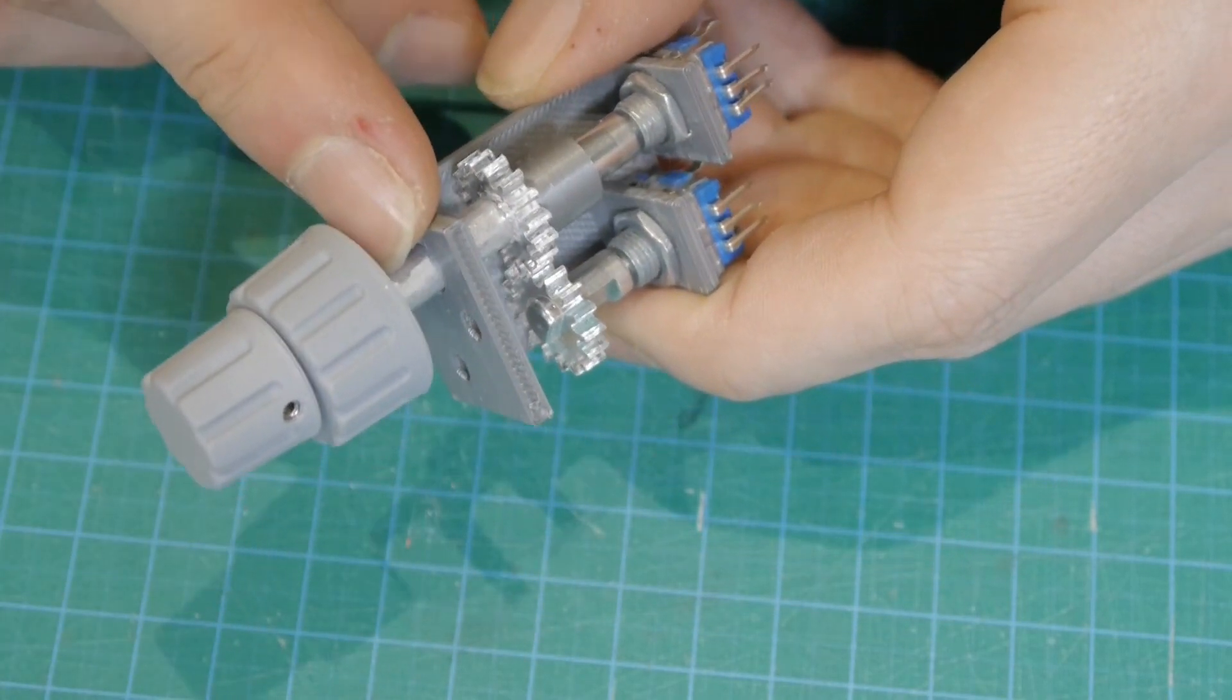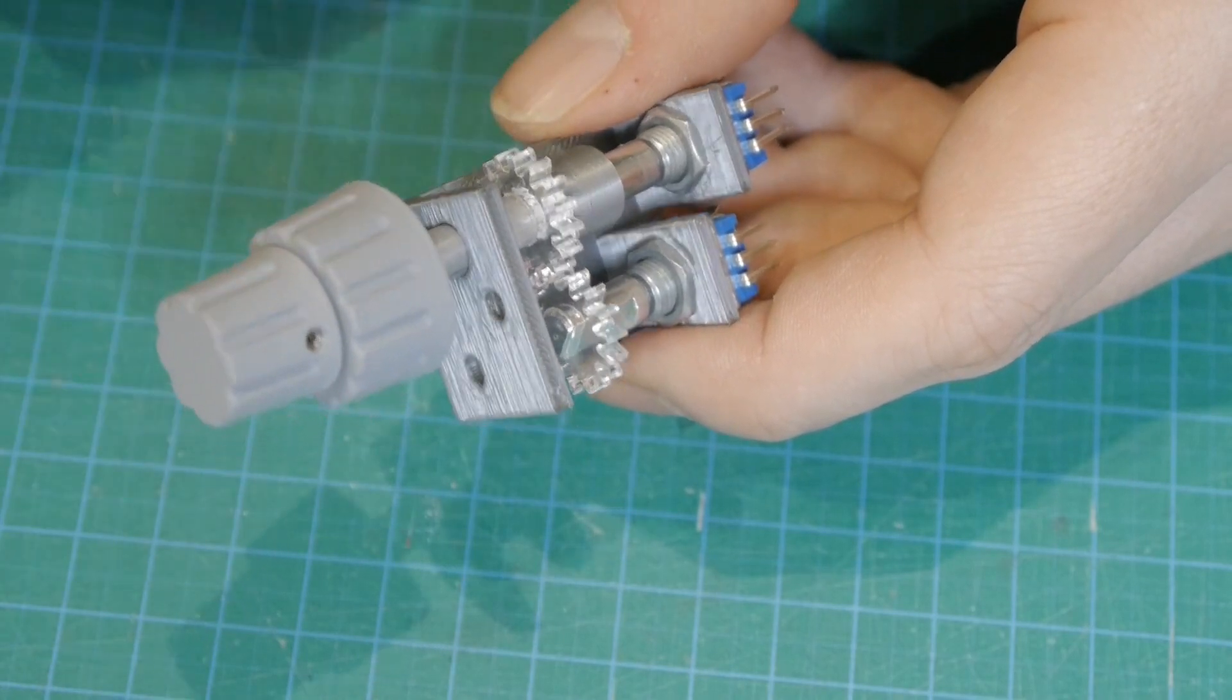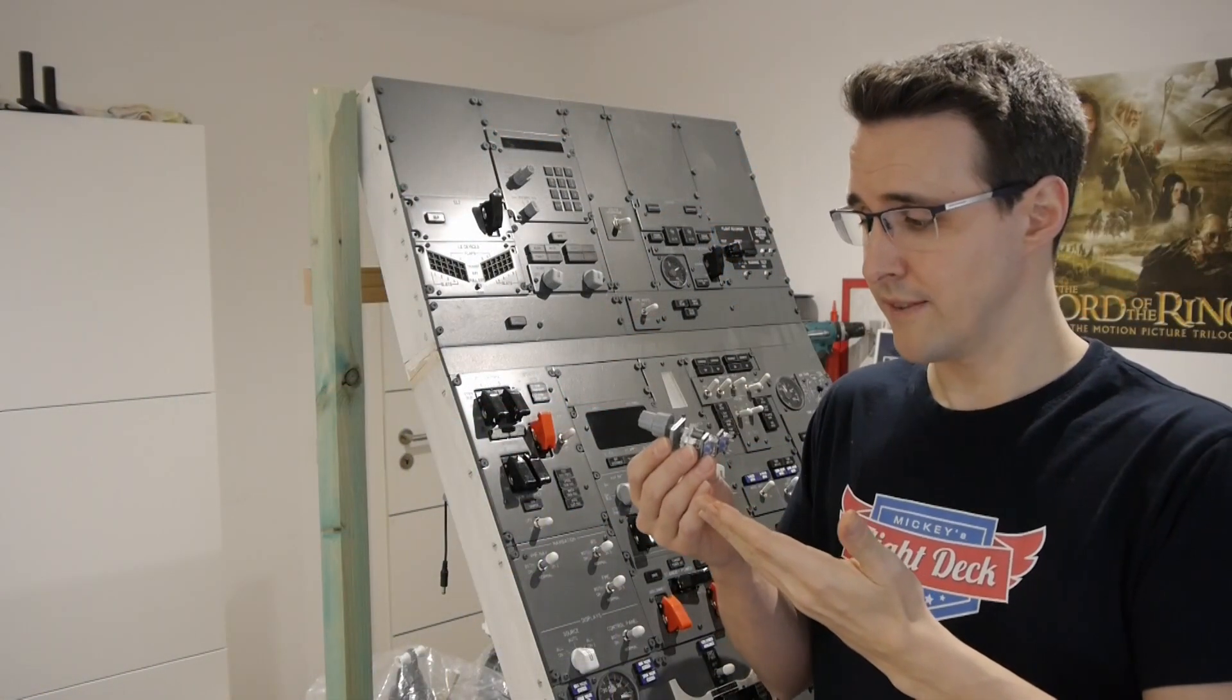Let the shaft go through the panel and then put the two knobs back in place. And here we already have the finished product.